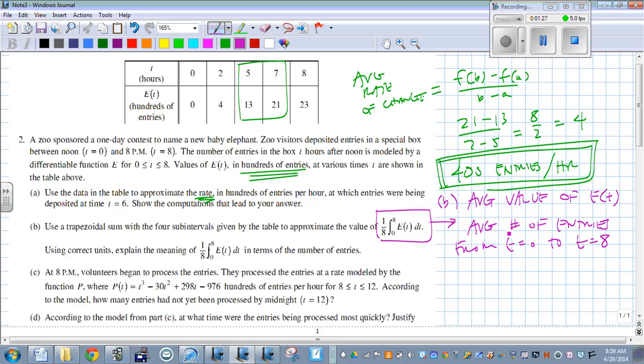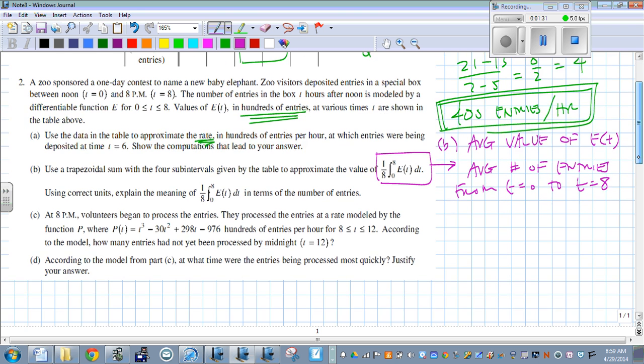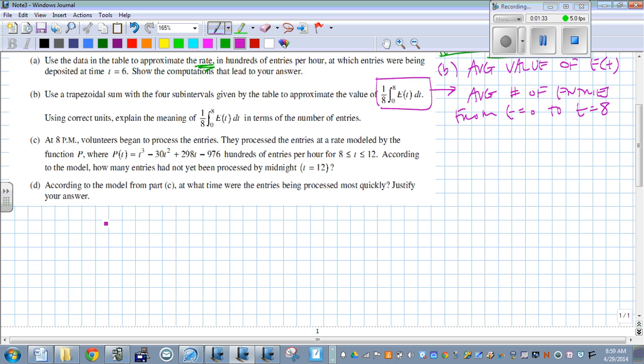Now we have to figure out what is that average number of entries. So we're going to do 1/8 times this definite integral. Well, this definite integral, we're approximating. It tells us to approximate it using a trapezoidal sum. And since these intervals are not exactly the same, we can't quite fit it into that trapezoidal sum formula. We have to do it piece by piece.